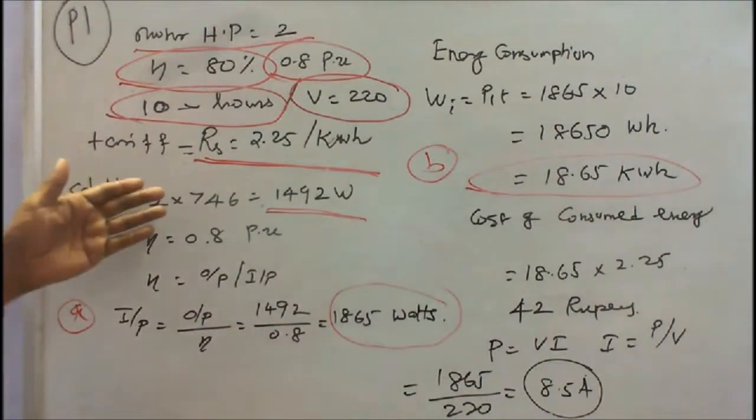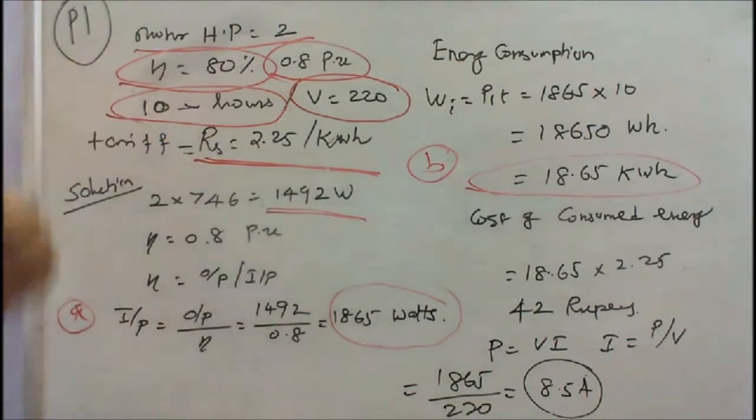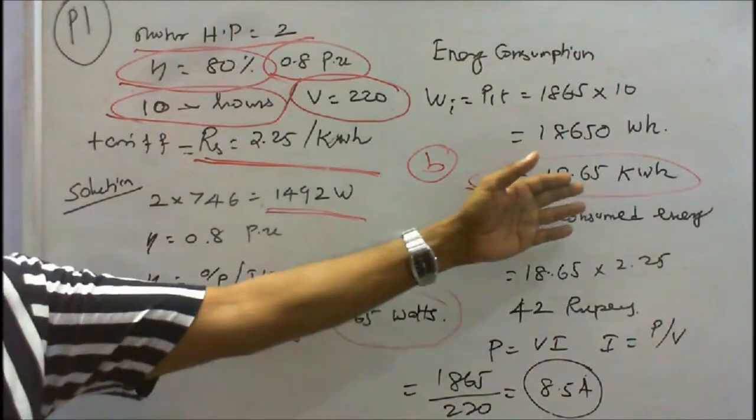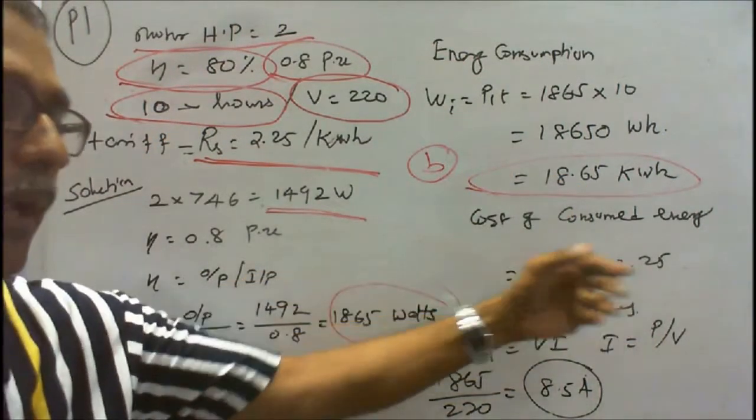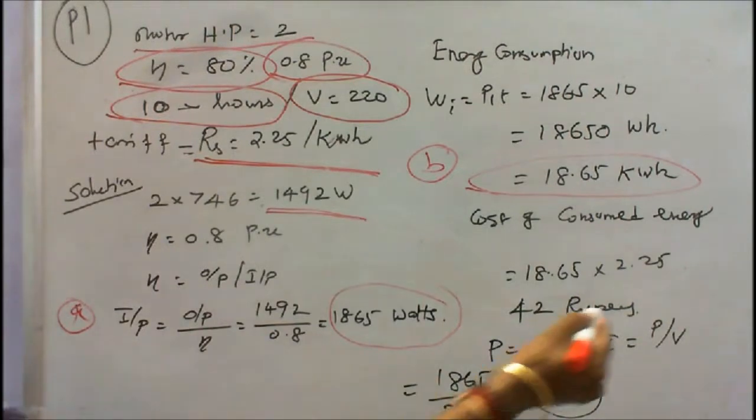The third is we have to find the cost of energy consumption. That is given Rs. 2.25 per unit. Now we know it: 18.65 into 2.25, we will get 42 rupees. We have to pay for 10 hours. This is C.